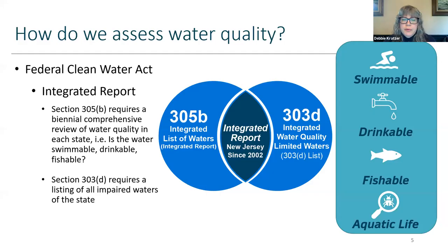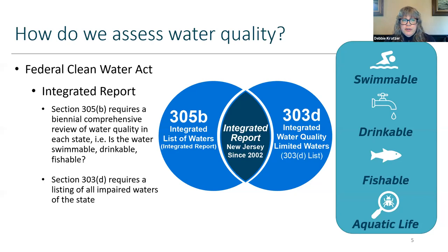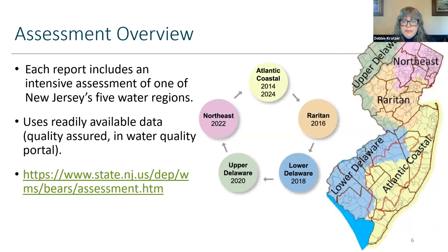States are required to create a list of water quality in each state compared to the uses you want to use that water for — swimmable, drinkable, fishable, and aquatic life. That's called the 305b report. The 303d report — these are named after sections of the Clean Water Act — lists those waters that are limited or not meeting water quality standards. We put those together and it's called the integrated report.